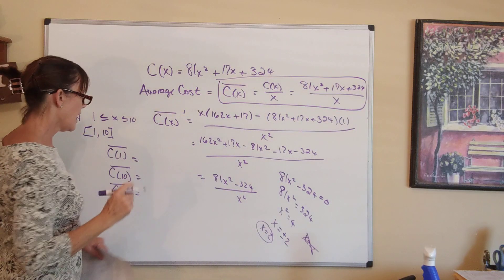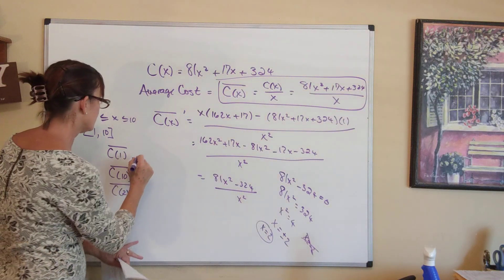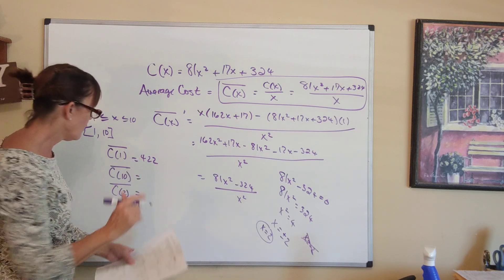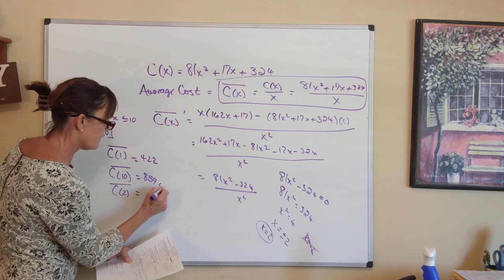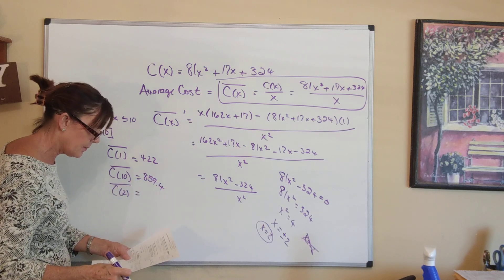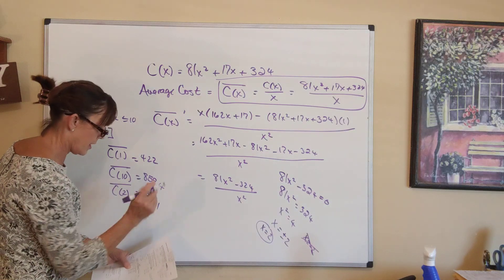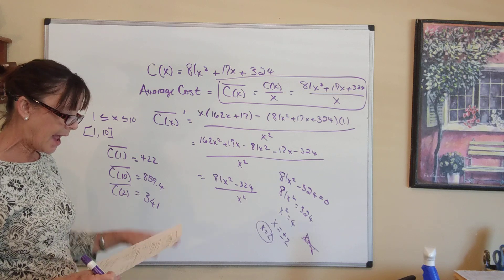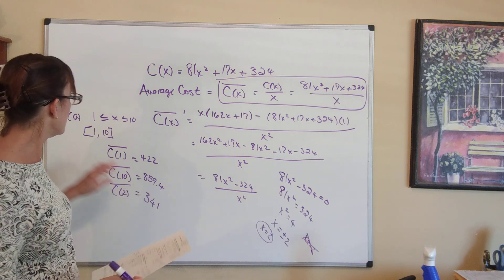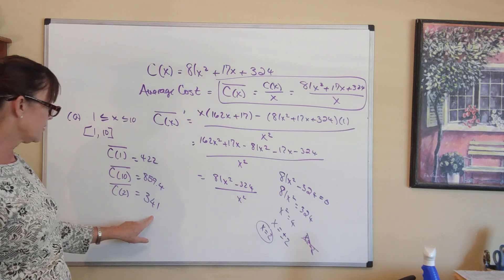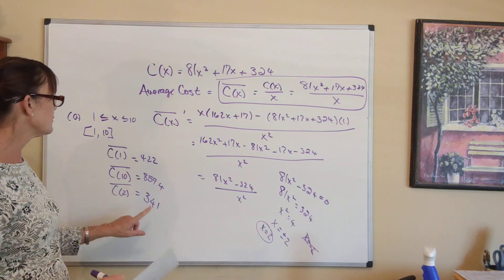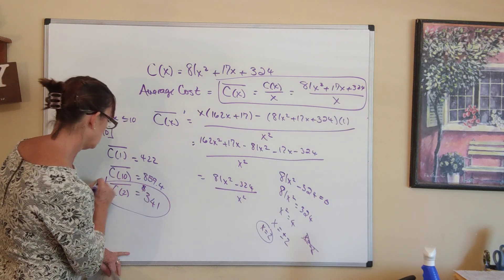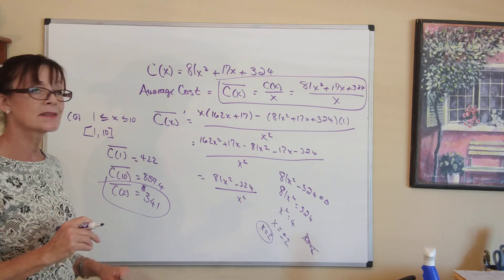Plugging into the average cost function: C̄(1) = 422, C̄(10) = 859.4, and C̄(2) = 341. The absolute minimum average cost on [1, 10] is 341, occurring when x = 2.